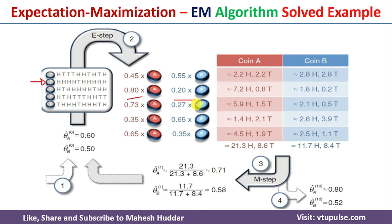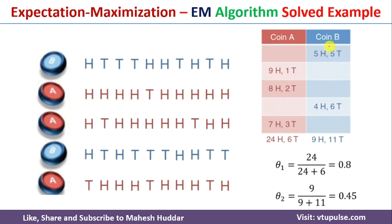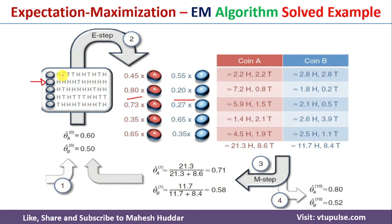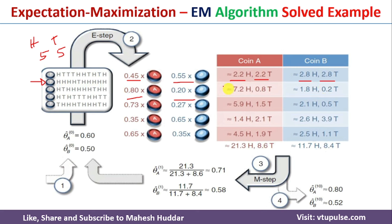Once we calculate these probabilities, unlike the known-label case where we wrote heads and tails in only one column, here we write the weighted heads and tails in both columns. For the first experiment with 5 heads and 5 tails and a probability of 0.45 for coin B: 5 × 0.45 = 2.25 heads and 5 × 0.45 = 2.25 tails for coin B, and 5 × 0.55 = 2.75 heads and 5 × 0.55 = 2.75 tails for coin A. We repeat this multiplication for all experiments to fill the weighted head and tail counts for each coin.